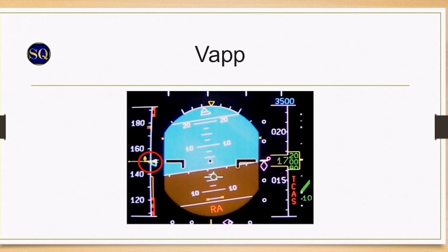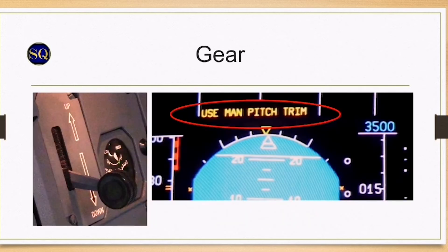RA 1 and 2 are lost with the associated call outs. Call outs will be made by pilot monitoring from the pressure altimeter. Landing gear extension will be delayed until reaching 1000 feet AAL. The gear is lowered normally.